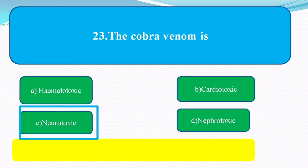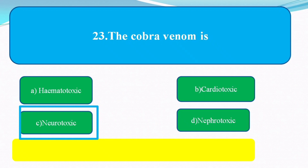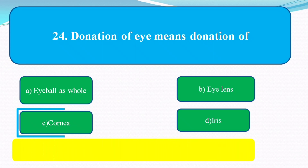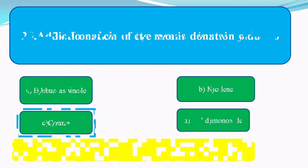Our next question is: eye donation means donation of what? The options are: eyeball, edge, whole eye, eye lens. The answer is eye lens — eye donation is for the cornea/lens.